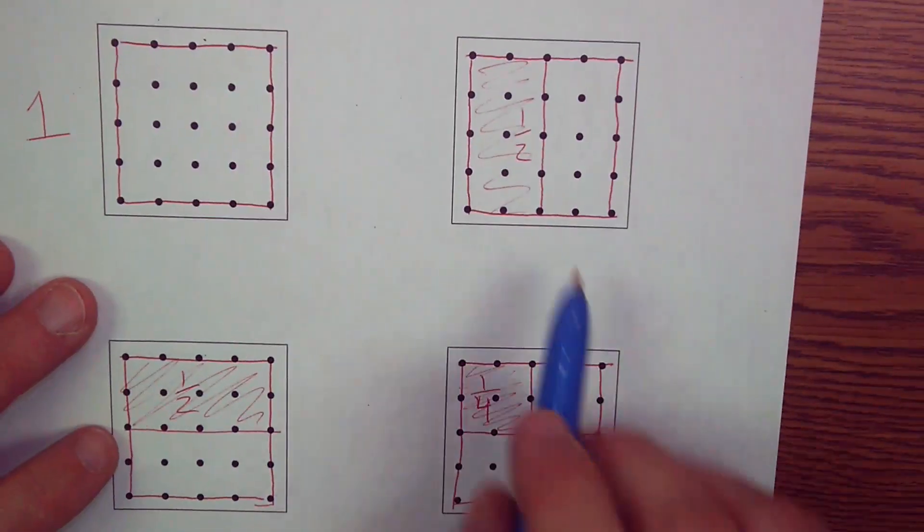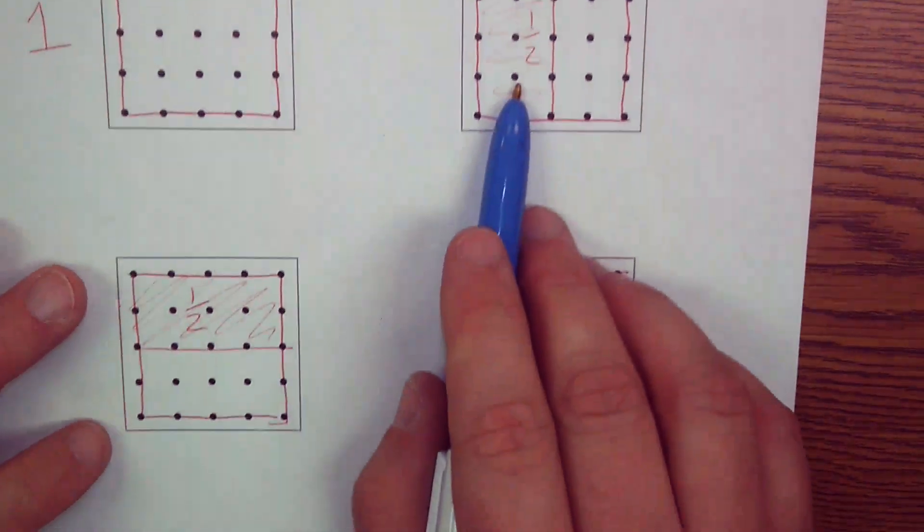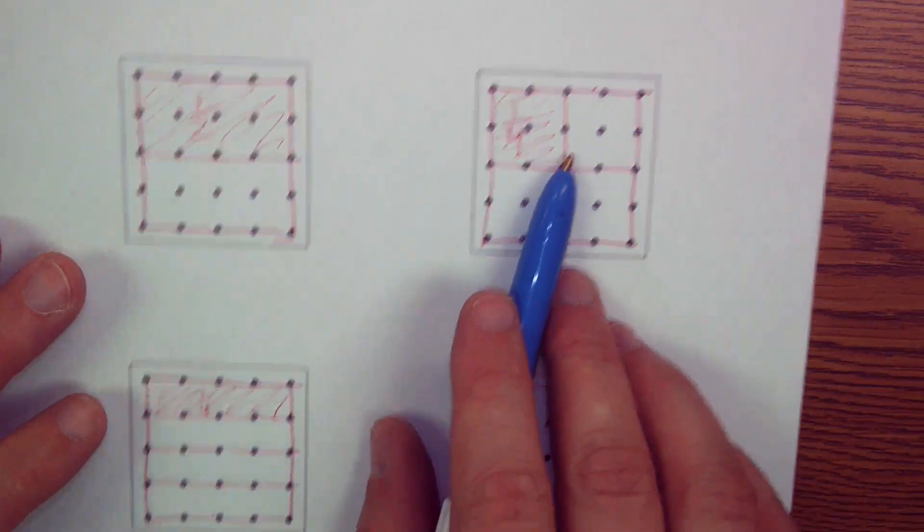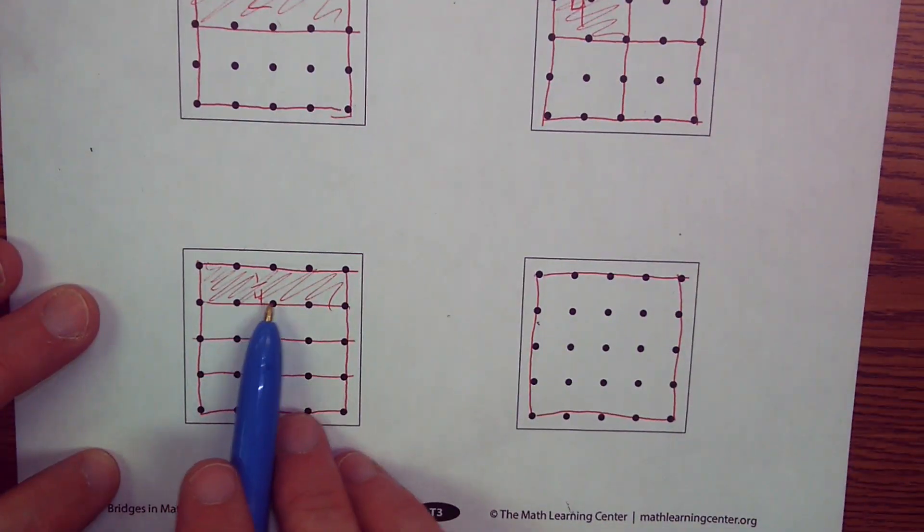So far, I've looked at a couple different things. I could do half up and down, half left and right. I could do squares for fourths, or I could do little strips for fourths.